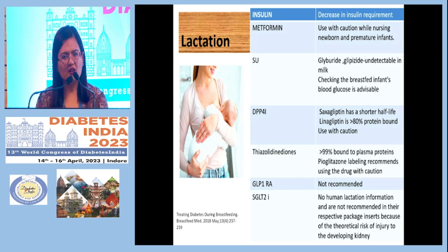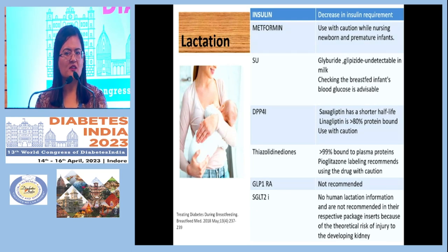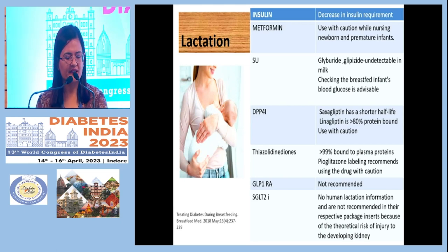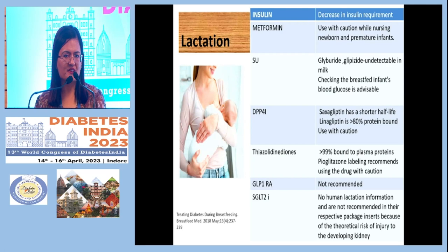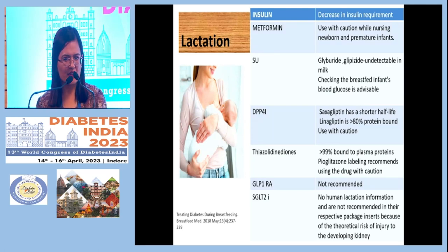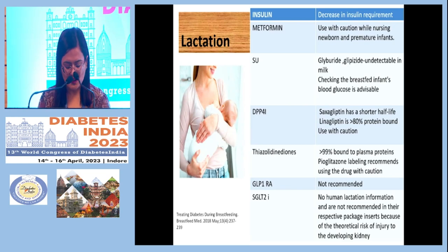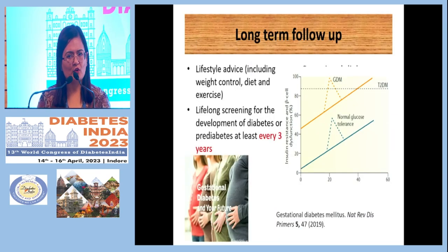Regarding lactation: metformin, sulfonylureas, and thiazolidinediones can be used with caution. GLP-1 receptor agonists and SGLT2 inhibitors are contraindicated. For DPP-4 inhibitors, use with caution; linagliptin is considered quite safe, and saxagliptin, having a shorter half-life, can also be considered.